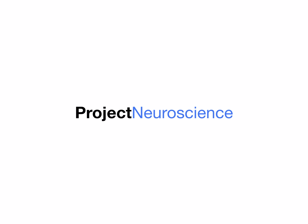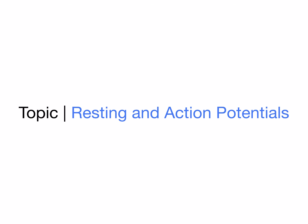This is Project Neuroscience. Today we are talking about resting and action potentials. Information is sent throughout the nervous system as a series of electrochemical impulses, or action potentials. The ability for a neuron to fire, or depolarize, is through carefully maintained intracellular and extracellular ion concentrations.